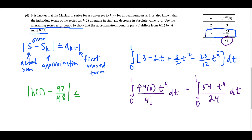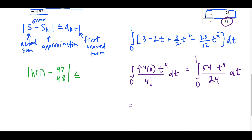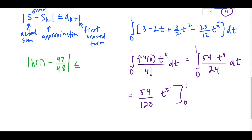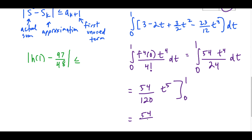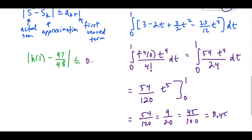Plugging in, we get 54 over 120 times (1 − 0) = 54/120. Simplifying by dividing top and bottom by 6 gives 9/20. Multiplying top and bottom by 5 gives 45/100 = 0.45. Therefore, the error is less than or equal to 0.45, as required.